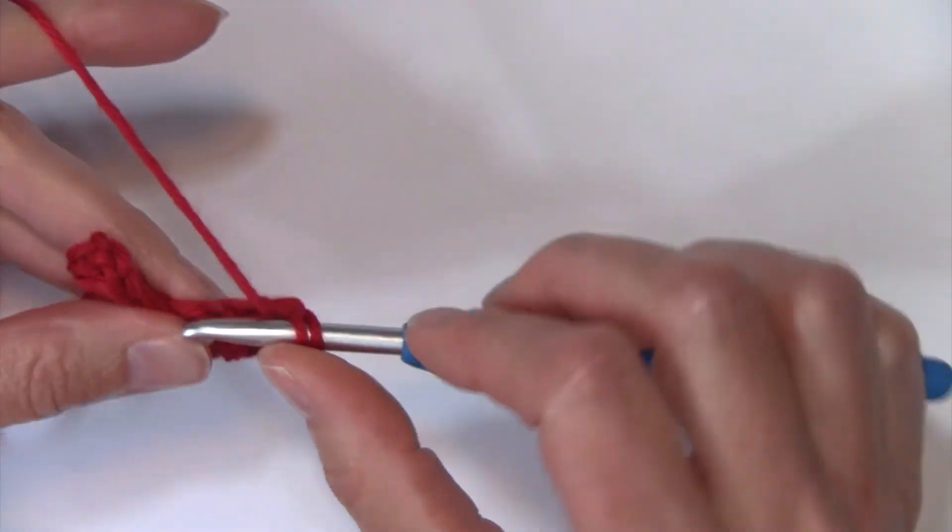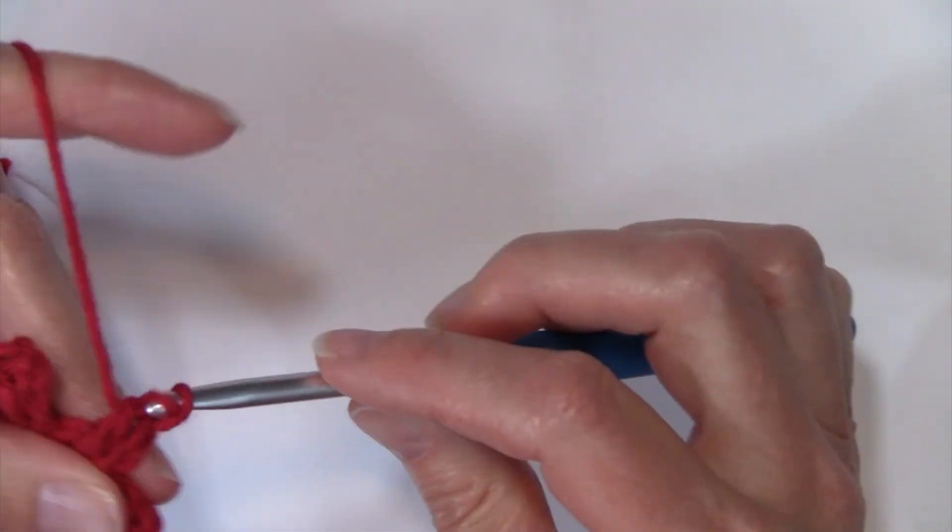I'm going to attach that to this block here by slip stitching into this chain two space. Chain two, work two half double crochets in that same space.